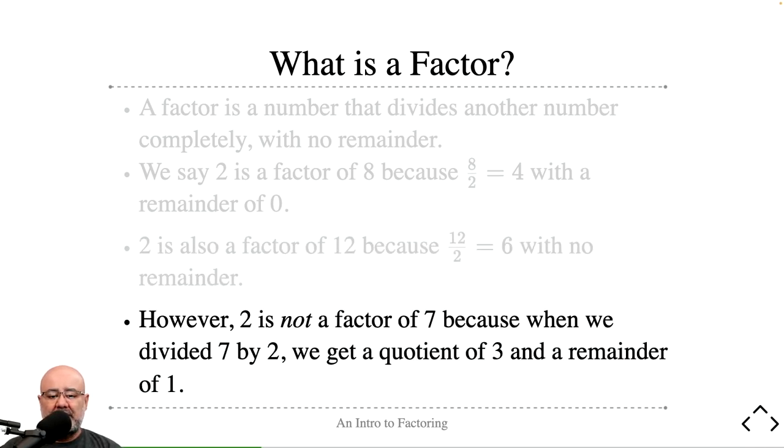By contrast, 2 is not a factor of 7 because if we try to divide 7 by 2, we get a quotient of 3. That means 2 goes into 7 evenly 3 times, but 2 times 3 is 6, so we're left with a remainder of 1.